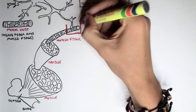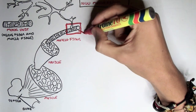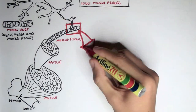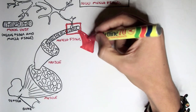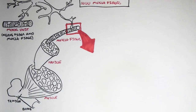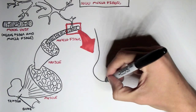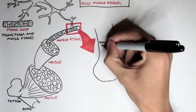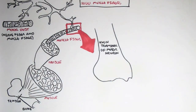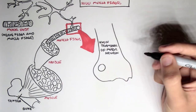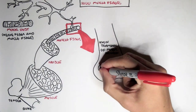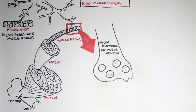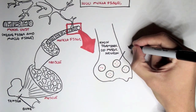Let's zoom into one motor unit and see what structures are around the muscle fiber and also the end of this neuron that assists in muscle contraction. Here we have the end bulb — the axon terminal of the motor neuron. The axon terminal has many vesicles, and these vesicles contain neurotransmitters known as acetylcholine.